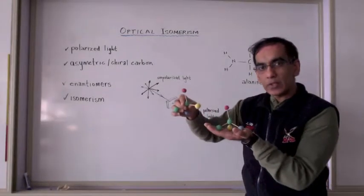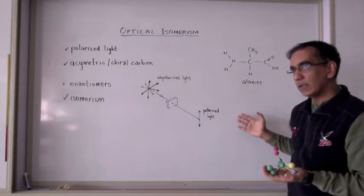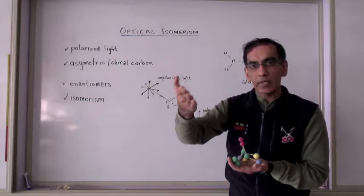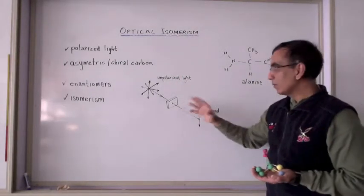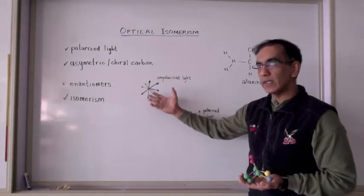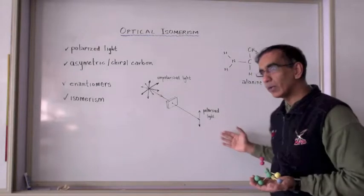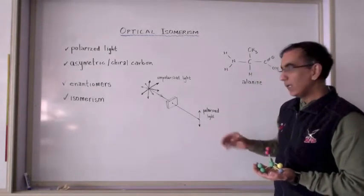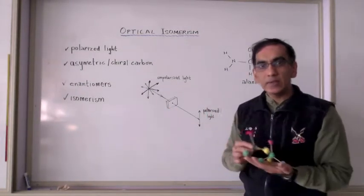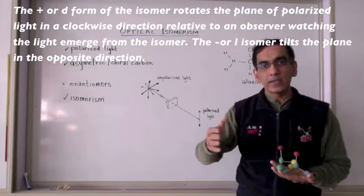Each of these mirror images, when isolated and put into a container and exposed to polarized light, each one tilts the plane of polarized light in an opposite direction. Polarized light, to put it simply, is light that vibrates in just one plane, whereas unpolarized light vibrates in multiple planes. So light that's been passed through a polarizer vibrates only in this one plane. And when this polarized light is sent through one optical isomer, it tilts the plane of light in one direction. And when it's sent through the other one, the plane of light is tilted in the opposite direction.